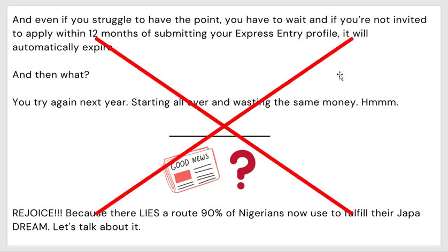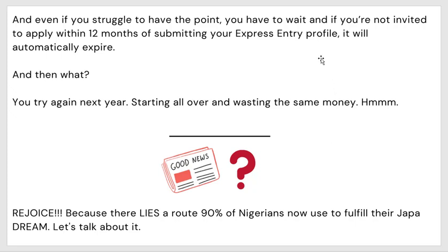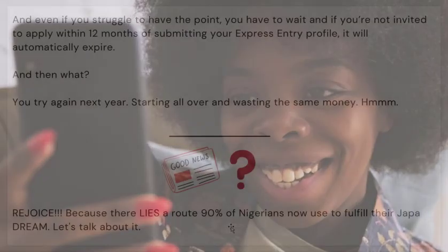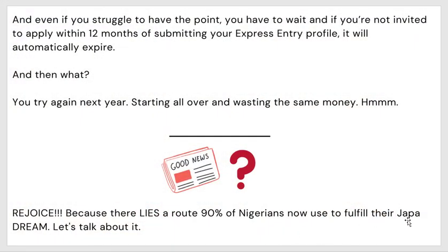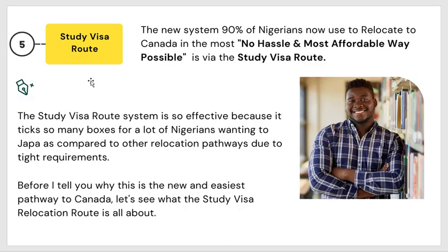So the express entry program is a no for us as well. However, if you think you can use these other routes to relocate to Canada, you can try on your own. But for us, we are focusing on a simpler program. Rejoice — because there is a route that 90 percent of Nigerians now use to fulfill their Japa dream. Let's talk about this new route.